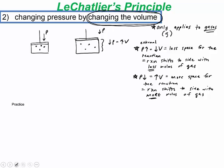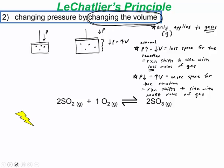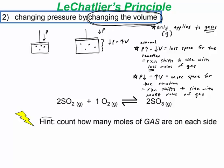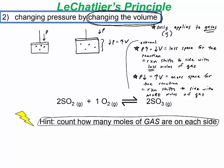Let's use the same reaction: 2 SO2 + O2 → 2 SO3. The key is to count moles of gas on each side. When you have more space, favor the side with more moles of gas; less space favors fewer moles. On the reactant side we have 2 + 1 = 3 moles of gas, and on the product side we have 2 moles of gas.